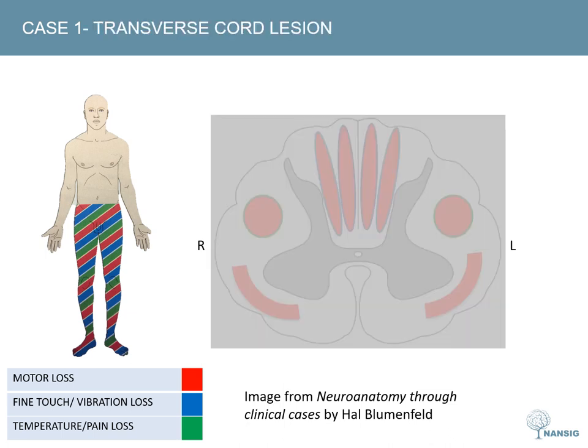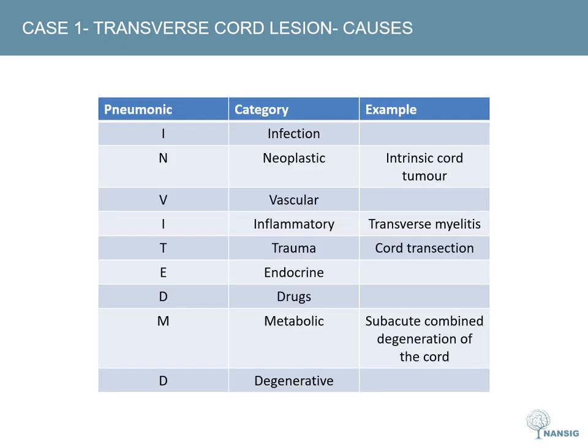Putting this together, this is likely a comprehensive transverse cord lesion around T10. Using a surgical sieve — the acronym INVITED MD — potential causes include neoplastic causes such as an intrinsic cord tumour, inflammatory such as transverse myelitis, traumatic such as cord transection, and metabolic such as subacute combined degeneration. Given this is a young woman with a history of painful eyes and reduced visual acuity suggesting previous optic neuritis, the cord lesion is most likely inflammatory — a transverse myelitis in the context of multiple sclerosis or neuromyelitis optica.